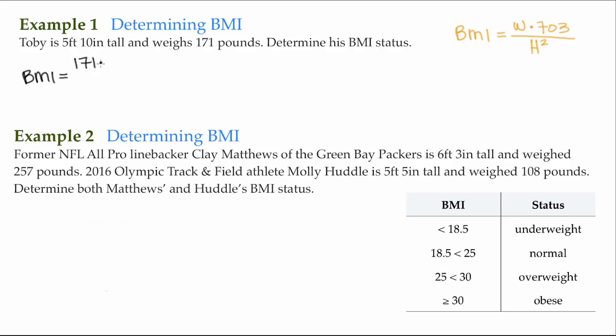We multiply that by 703 from the formula, then divide by his height in inches. His height is given as 5 feet 10 inches. There's 12 inches in a foot, so 5 times 12 is 60, plus 10 more inches gives us 70 inches, and we square it. Doing the arithmetic, his BMI is about 24.53.